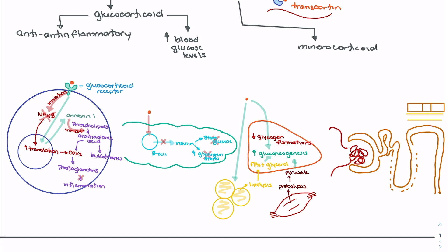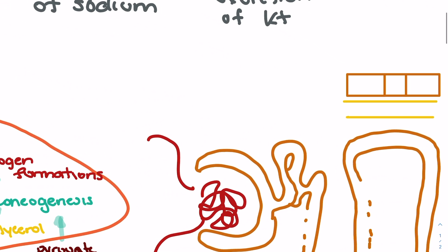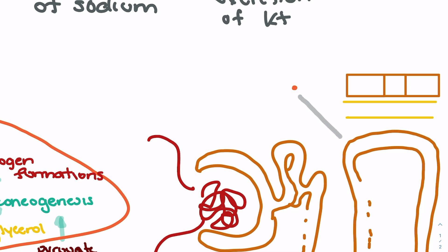Finally, we need to look at the mineralocorticoid function of hydrocortisone, where it replaces the function of aldosterone. Aldosterone plays two important roles: reabsorption of sodium and excretion of potassium. Hydrocortisone mimics this function primarily at the distal convoluted tubule (DCT) of the kidney, where it will perform these same functions.